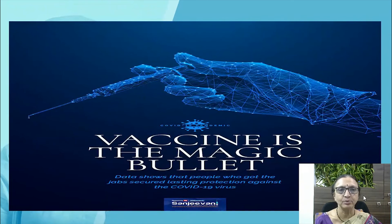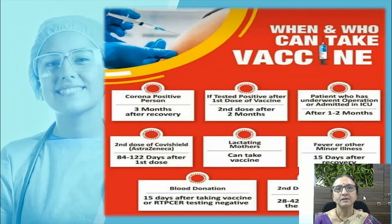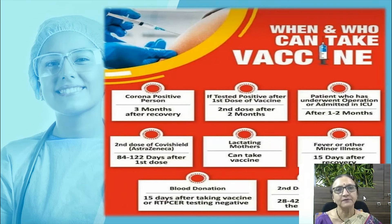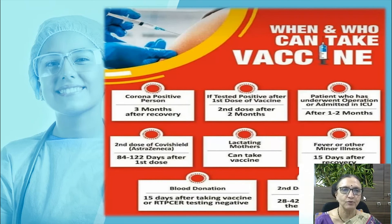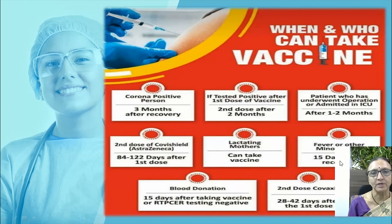Vaccine is the magic bullet — we should follow a good vaccination schedule to prevent many diseases. Regarding the COVID vaccine: if a person is corona positive, they should take the vaccine three months after recovery. If tested positive after the first dose, the second dose should be taken after two months. Patients who underwent surgery or were admitted to the ICU should take the vaccine after one to two months. The second dose of Covaxin is given 28 to 42 days after the first dose.